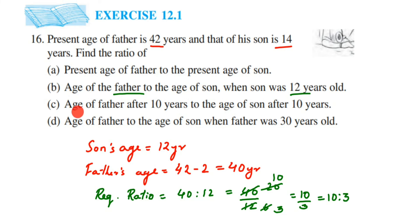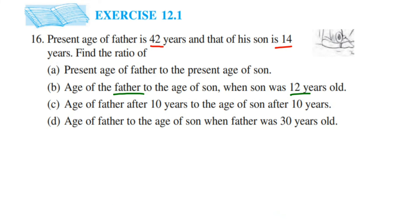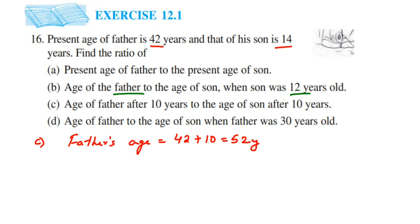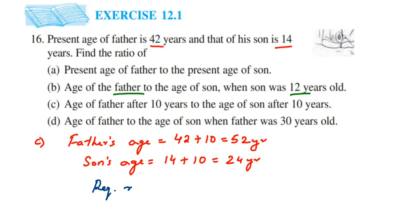The third question asks for the age of father after 10 years to the age of son after 10 years. We know the present age of the father is 42, so we add 10 to both ages. Father's age after 10 years will be 42 plus 10 which is 52 years. Similarly, son's age is 14, so 14 plus 10 will be 24 years. So the required ratio will be equal to 52 is to 24.